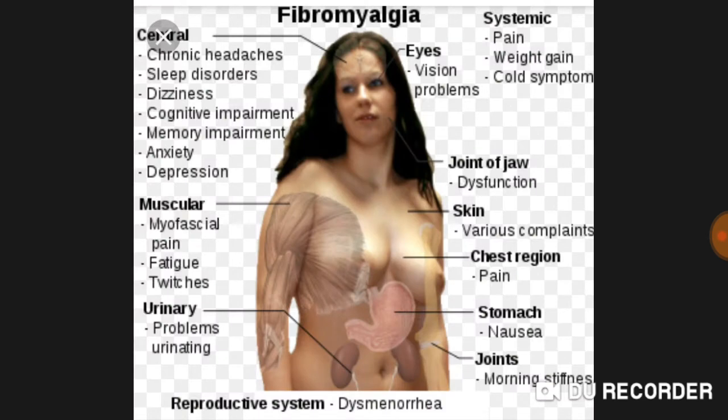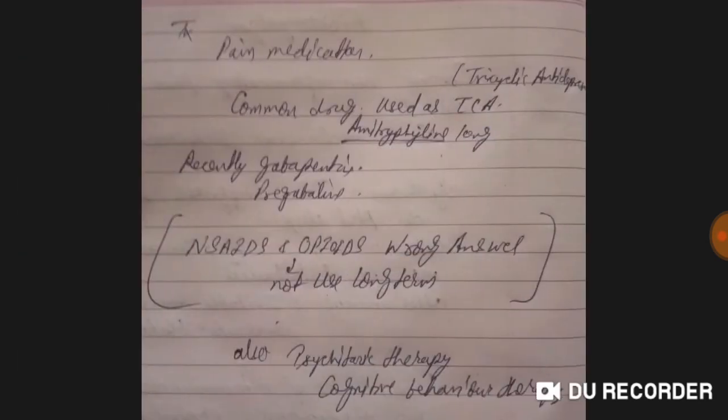You can search for images of fibromyalgia trigger points on Google to visualize the pain points. Clinically, a patient with pain at more than 11 of the 18 trigger points meets the diagnostic criteria.